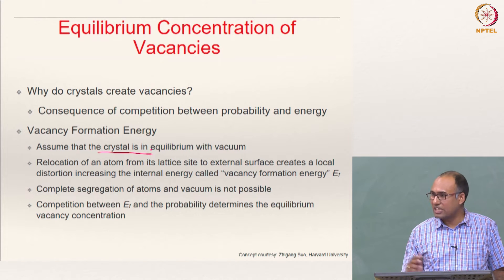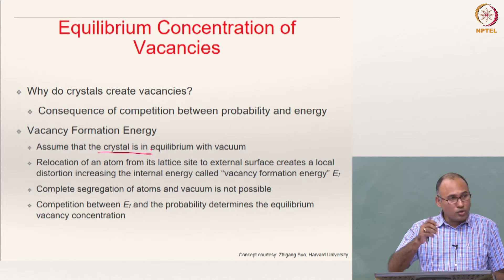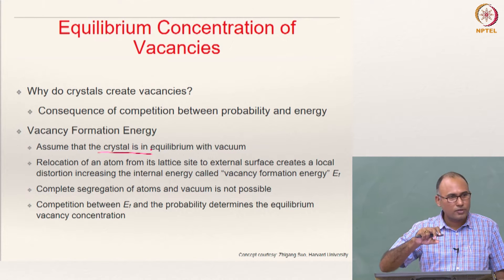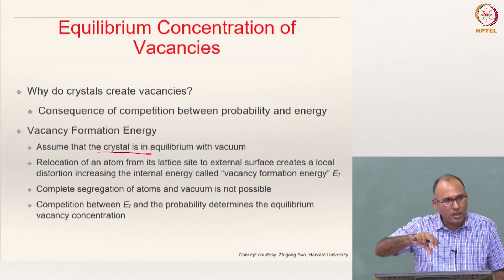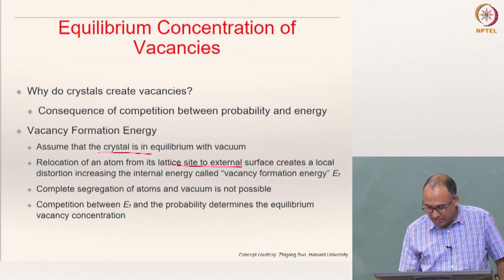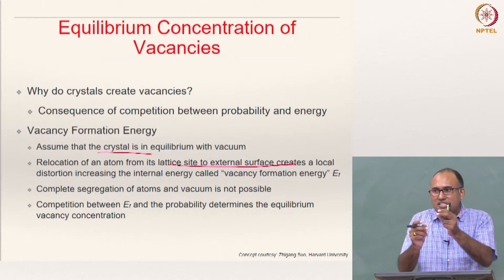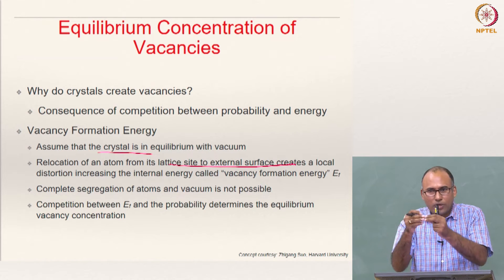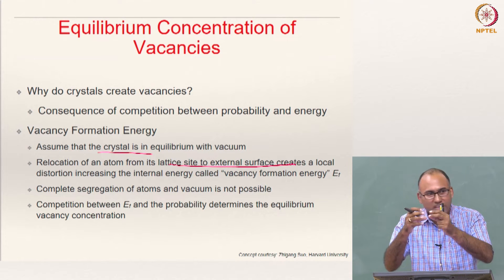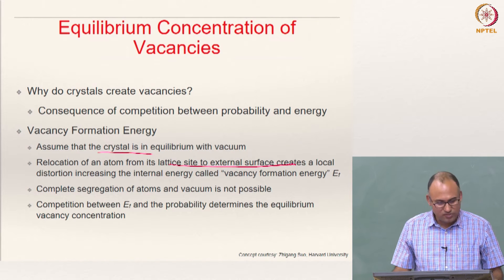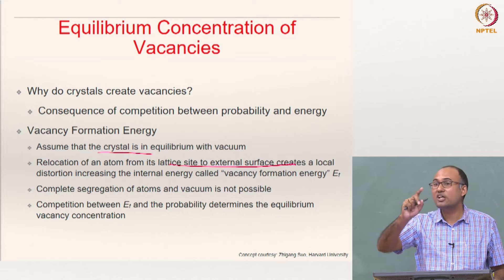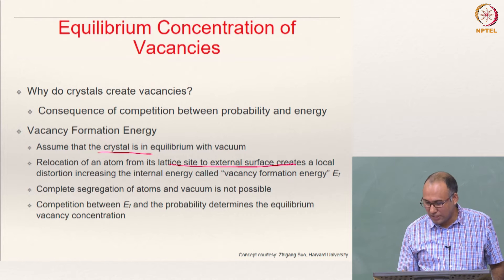Let us assume that the crystal is in equilibrium with vacuum. If you want to relocate an atom from one of its lattice sites in the bulk, you need to break the bonds and move the atom from the bulk to the surface. This relocation creates a local distortion in the crystal lattice because one atom is suddenly missing, the bonds are broken, and the surrounding atoms deform — increasing the internal energy of the system.